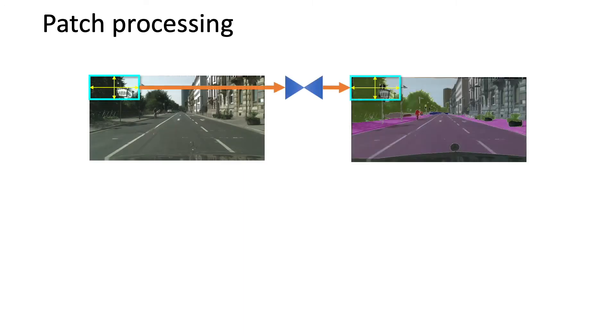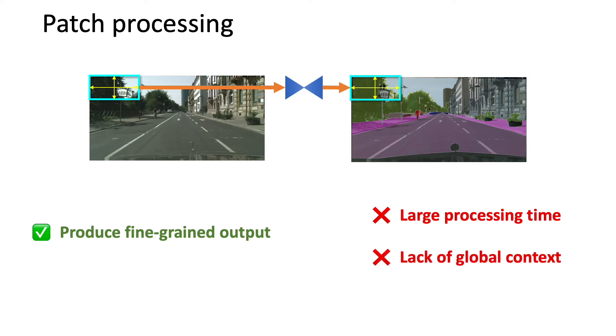In patch-based processing, high-res images are divided into smaller patches that can be fed to the memory. A set of predictions after processing are ensembled to a high-res segmentation map. Due to keeping the image resolution, the segmentation map is very fine-grained. However, the processing time of this approach is large and this framework will fail to detect large objects when each patch contains only a part of the object.